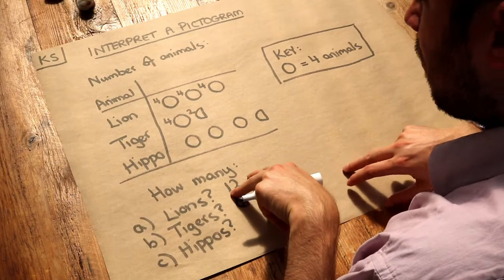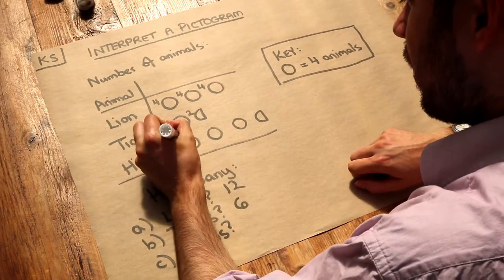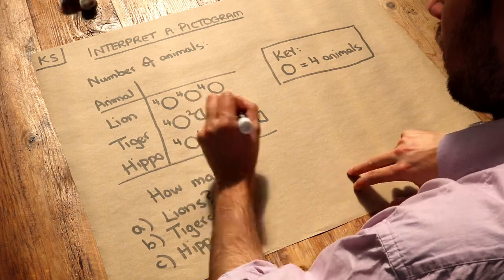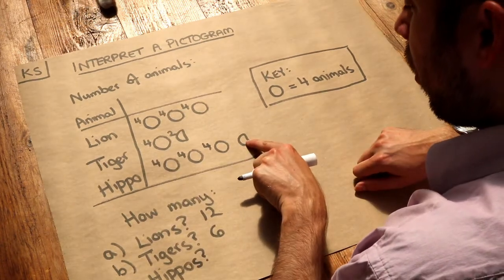And then finally, how many hippos? We've got four hippos here, four hippos here, four hippos here, and then we've got half a circle.